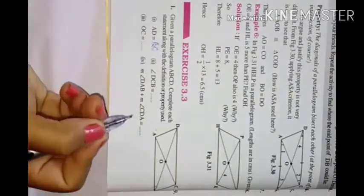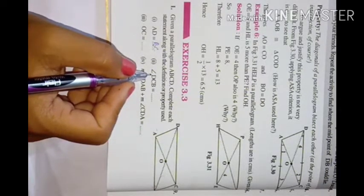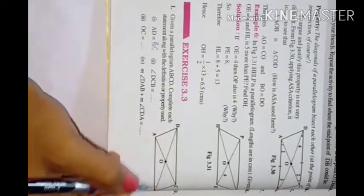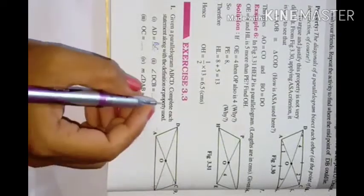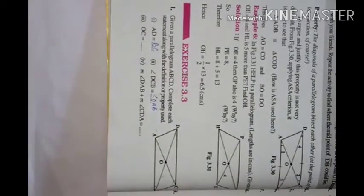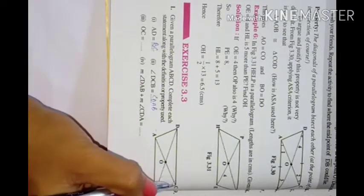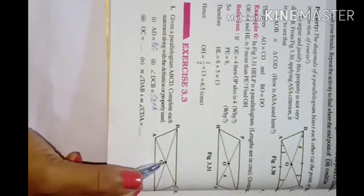So AD is equal to BC from the property of parallelogram. Also, opposite angles are equal, so angle DCB equals angle DAB. The diagonals AC and DB bisect each other, meaning they cut each other equally.